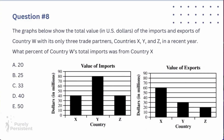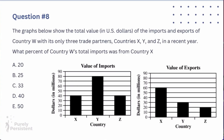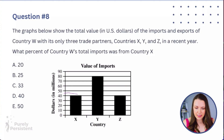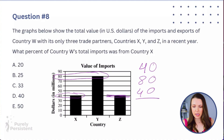Question number eight. The graph below shows the total value in US dollars of the imports and exports of country W with its only three trade partners: countries X, Y, and Z. In a recent year, what percent of country W's total imports was from country X? So we're talking about imports — we don't need the export chart. X is at the 40 mark, Y is at 80, and Z is also at the 40 mark. So 40 plus 80 plus 40 is 160.